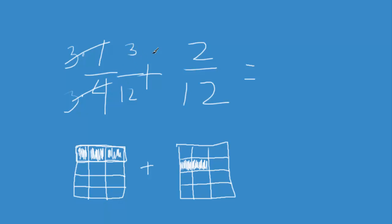So now I'm going to add 3 plus 2 equals 5, and I'm going to leave the 12 because I still have the big box of 12. So I'm going to have 5/12. So this is going to equal,